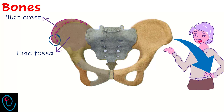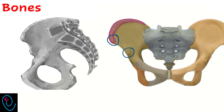The anterior border of the ilium has two bony prominences. They are not clear in this view, but here in a lateral view we can see them clearly. The upper one is called the anterior superior iliac spine. The lower prominence is called the anterior inferior iliac spine.